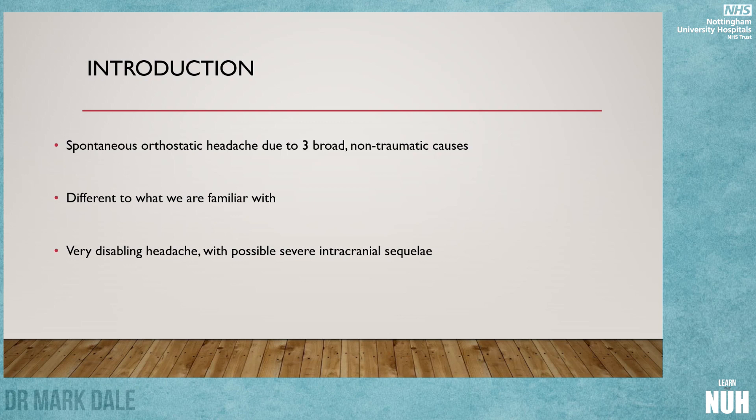There are three broad causes. Number one, these patients have problems with their spine - they might have a bony spicule or a disc issue. Number two, it can be a fistula between the CSF and the vein. Number three, it can be spontaneously occurring fenestrations along the course of the patient's spine. And then of course there's a whole bunch of idiopathic causes.